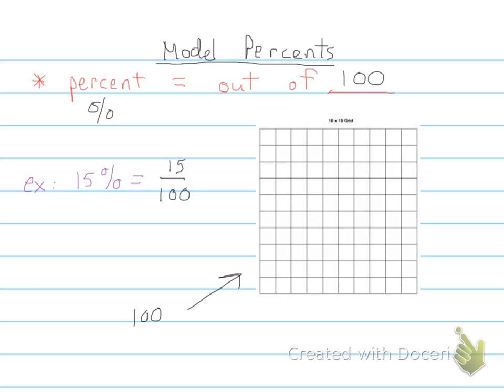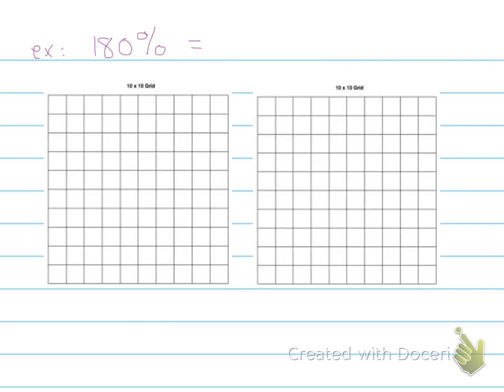This represents our model of 100 percent. So 15 percent of that would be 15 of these shaded in: one, two, three, four, five, six, seven, eight, nine, ten, eleven, twelve, thirteen, fourteen, fifteen. So a model of 15 percent would be 15 out of 100 shaded in on a grid.